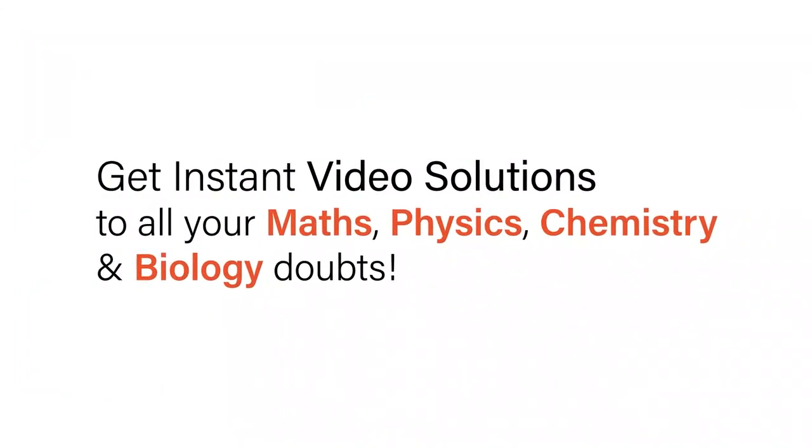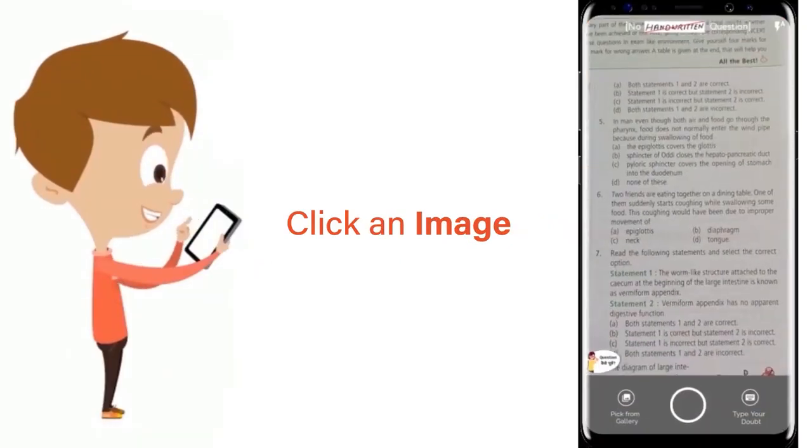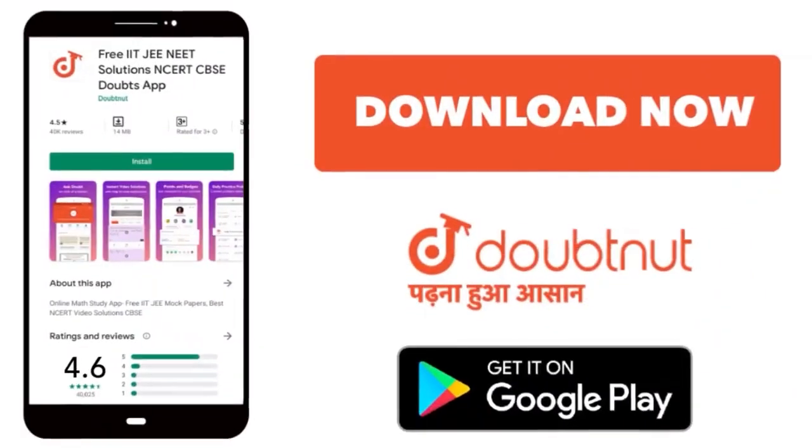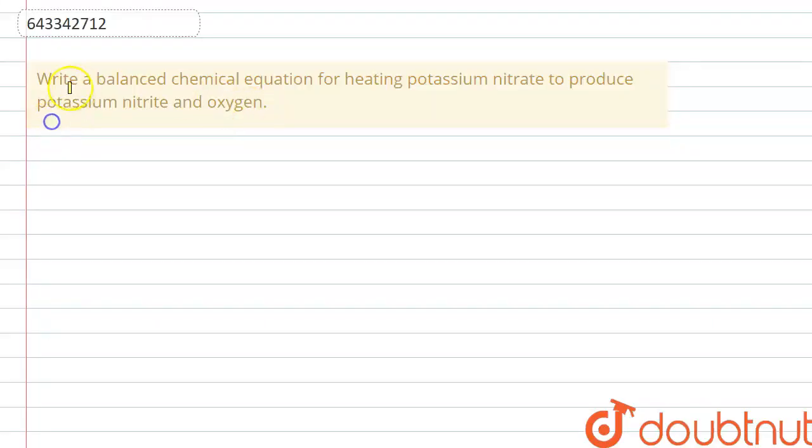With Doubtnet get instant video solutions to all your maths, physics, chemistry, and biology doubts. Just click the image of the question, crop the question, and get instant video solution. Download Doubtnet app today. Hello everyone, the question is write a balanced chemical equation for heating potassium nitrate to produce potassium nitrite and oxygen.